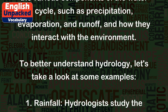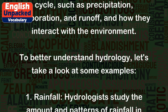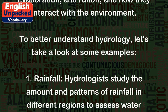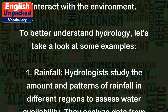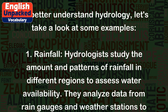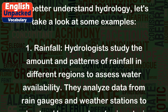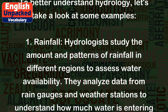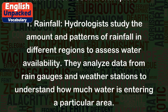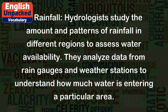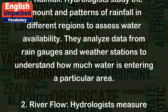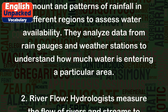To better understand hydrology, let's take a look at some examples. First, rainfall: hydrologists study the amount and patterns of rainfall in different regions to assess water availability. They analyze data from rain gauges and weather stations to understand how much water is entering a particular area.